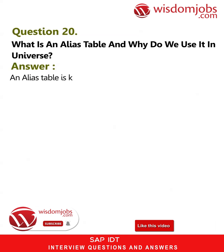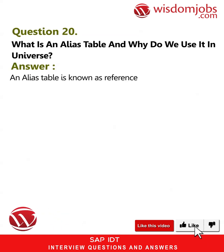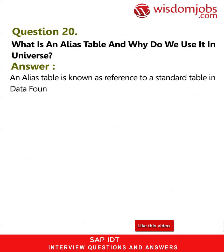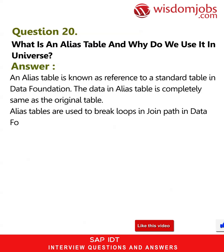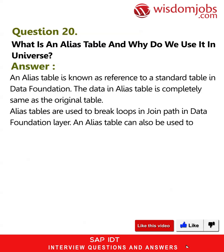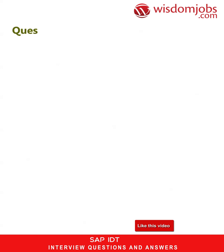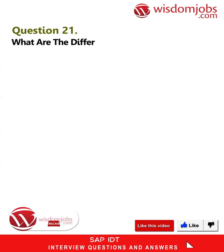Question 20: What is an alias table and why do we use it in a universe? Answer: An alias table is a reference to a standard table in the data foundation. The data in an alias table is completely the same as the original table. Alias tables are used to break loops in join paths in the data foundation layer. An alias table can also be used to rename a table.